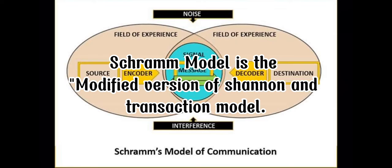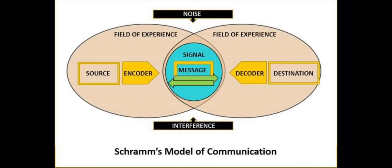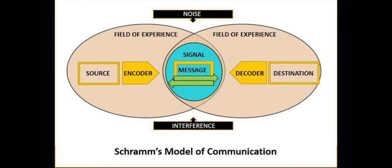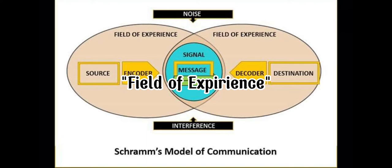However, it only contains one noise barrier, but some elements are improved such as sender, encoder, signal, decoder, and receiver. There was also another element added in this model which is the field of experience, which clearly talks about the knowledge or experience of each person about the topic — both the sender and receiver.